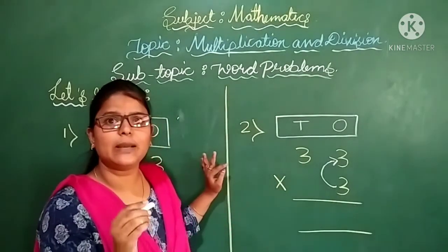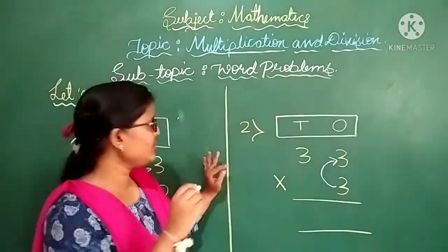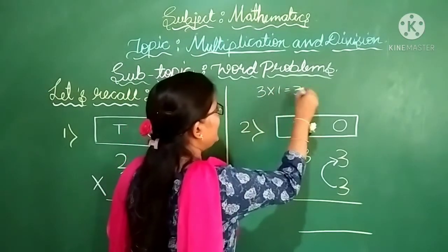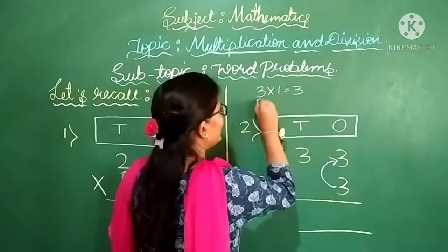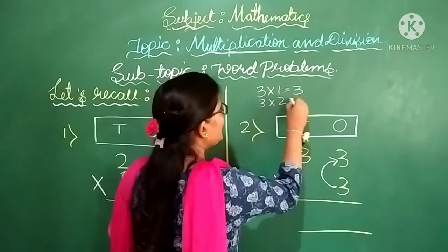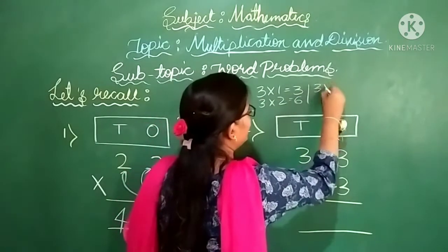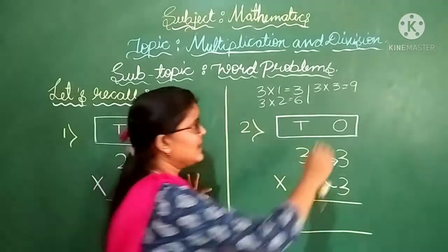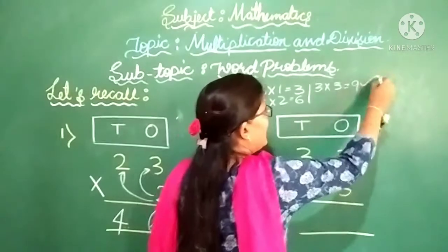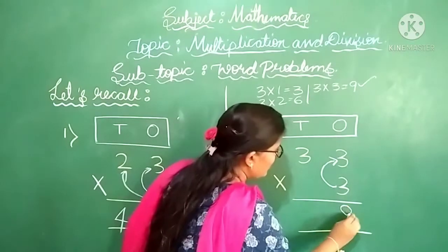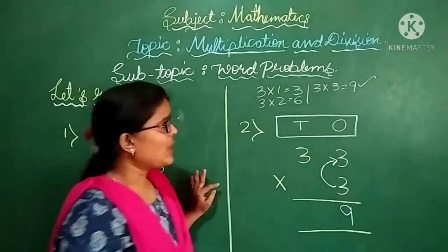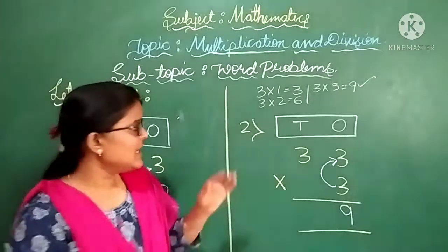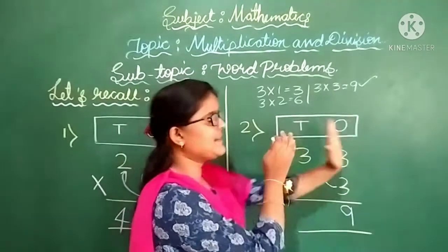Now remember the table of 3: 3 one is 3, 3 twos are 6, 3 threes are 9. Write down this 9 under the 1s column. This completes our 1s part.